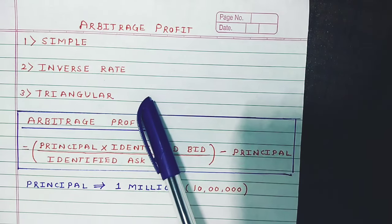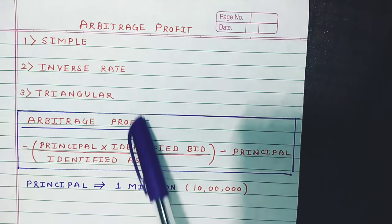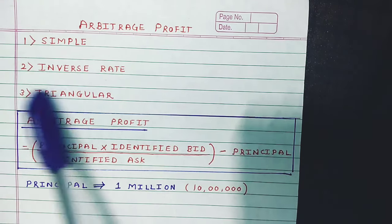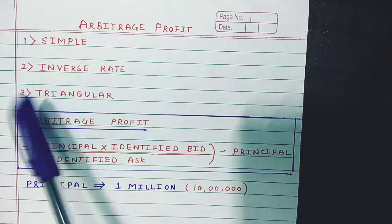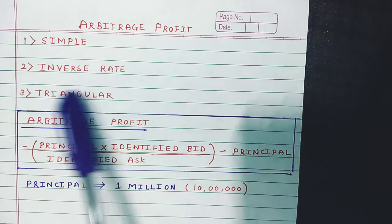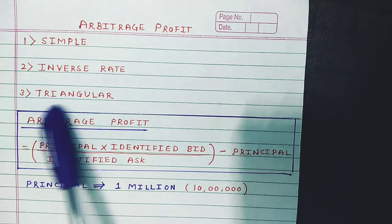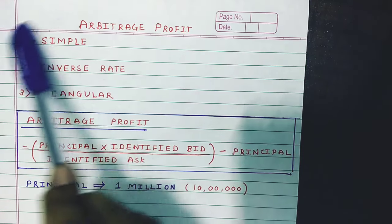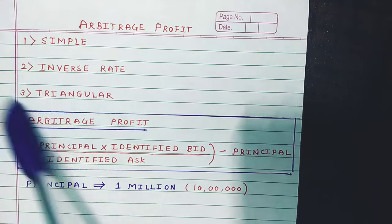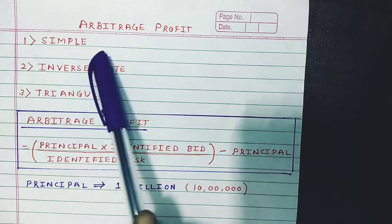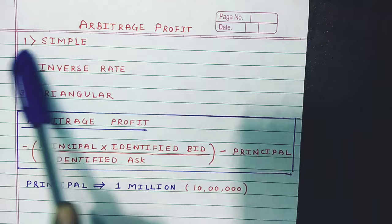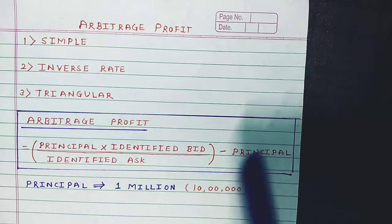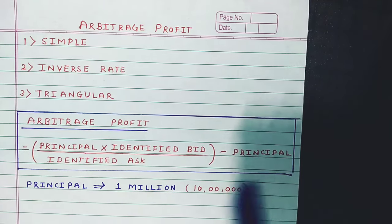Now in case of the Mumbai University TYBMS syllabus, you are having three types of sums. One is the simple calculation of Arbitrage Profit. The second type is when you compute Arbitrage Profit with the help of the inverse rate. And the third type is Triangular Arbitrage. I am going to make separate lectures for all three. In today's lecture, we are going to study the computation of simple Arbitrage Profit — no adjustment, nothing. You are having one simple formula for the computation of this Arbitrage Profit.